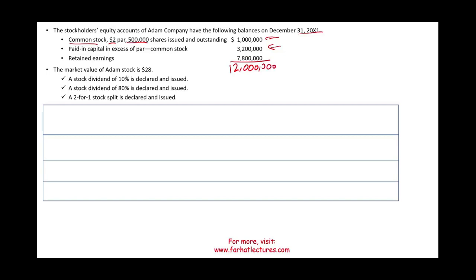The market value of Adam's stock is $28. We're going to issue a 10% stock dividend, then we're going to issue an 80% stock dividend — two independent situations — and we're going to do a 2-for-1 stock split. We're going to perform the calculation, journalize the entries, and see the effect on stockholders' equity.